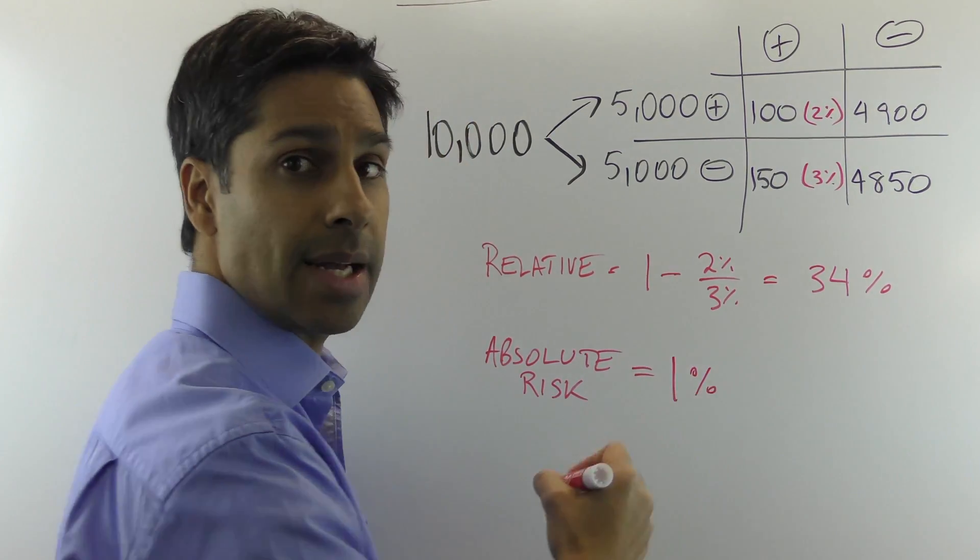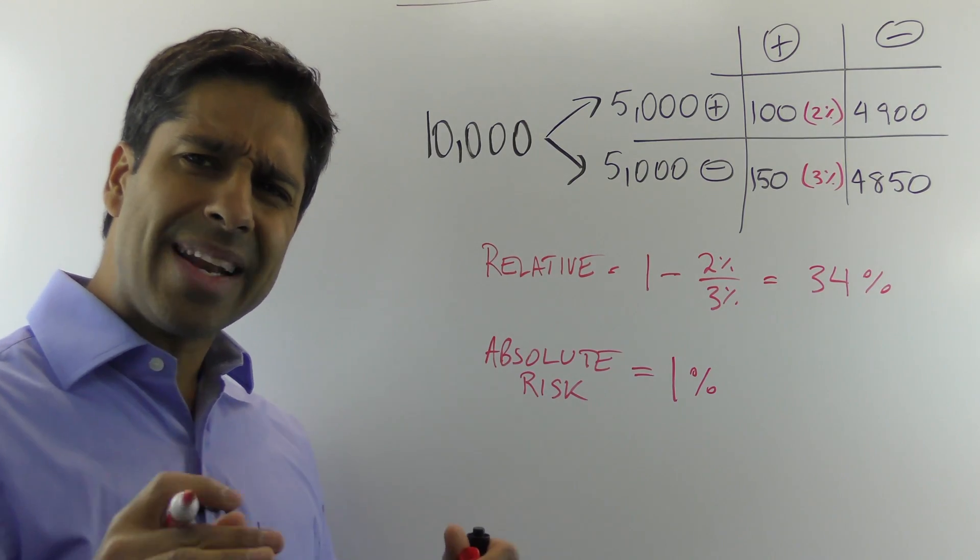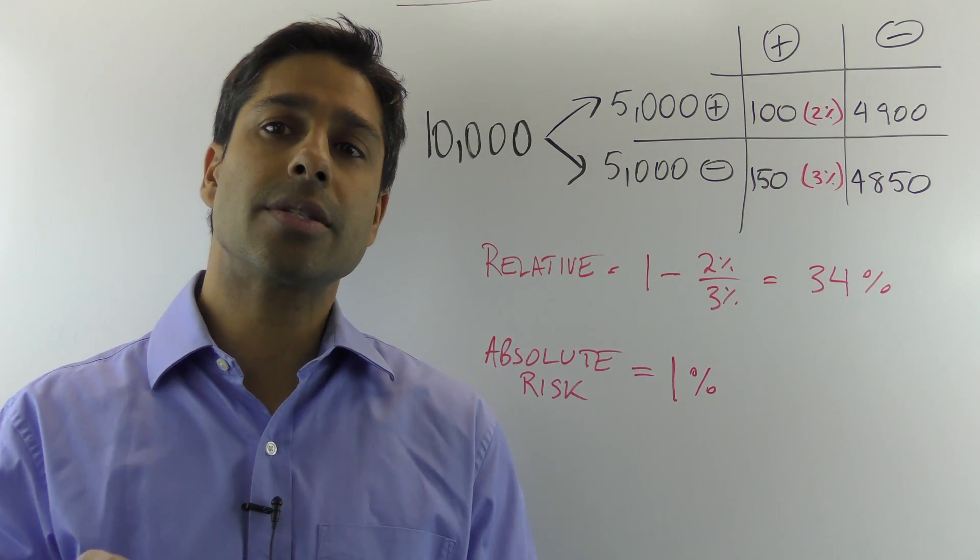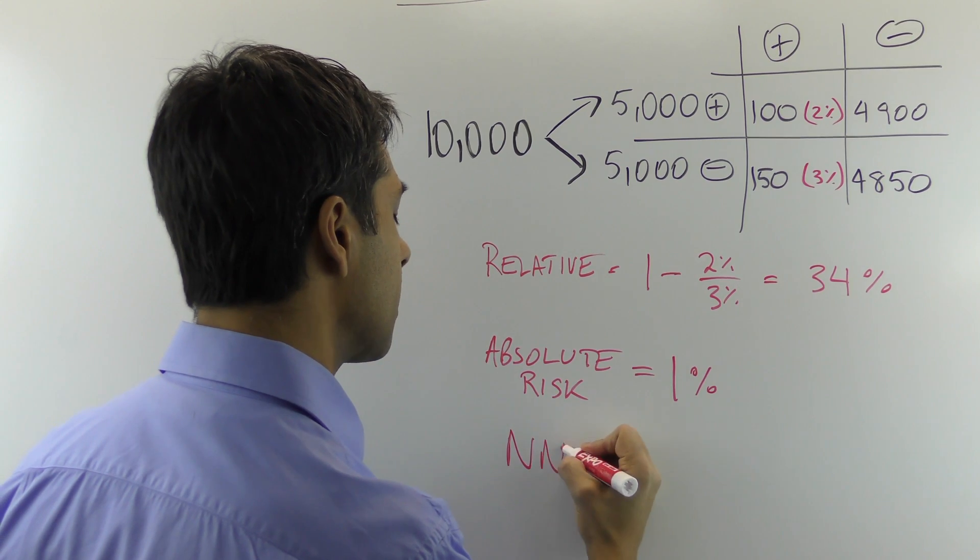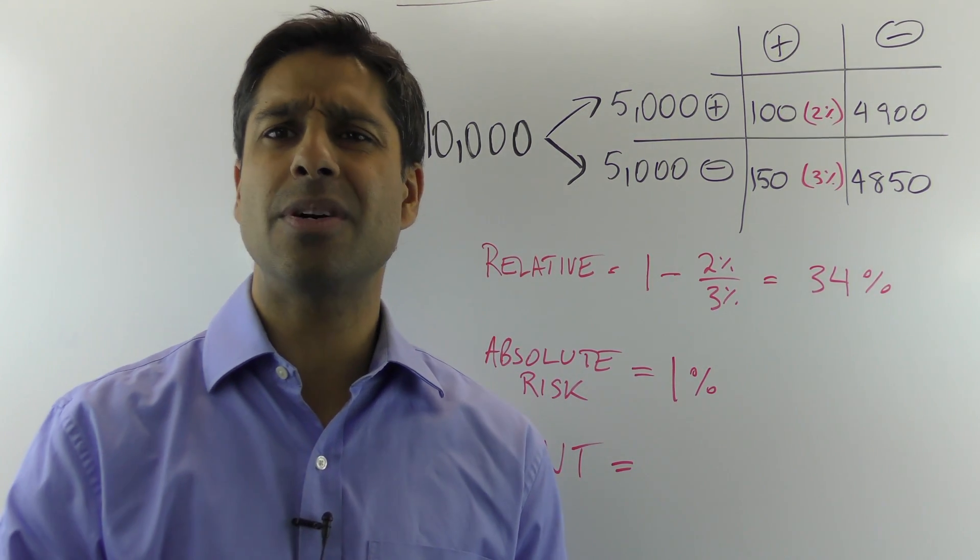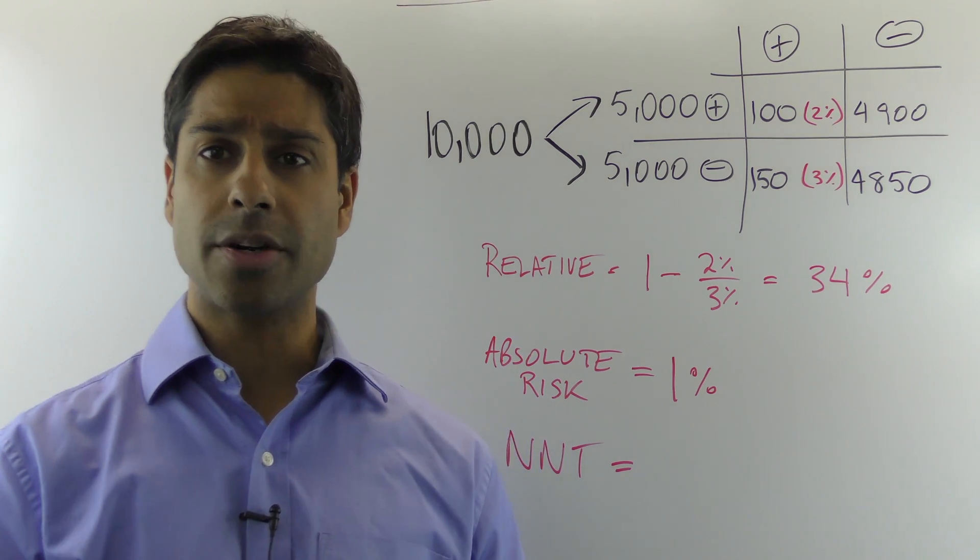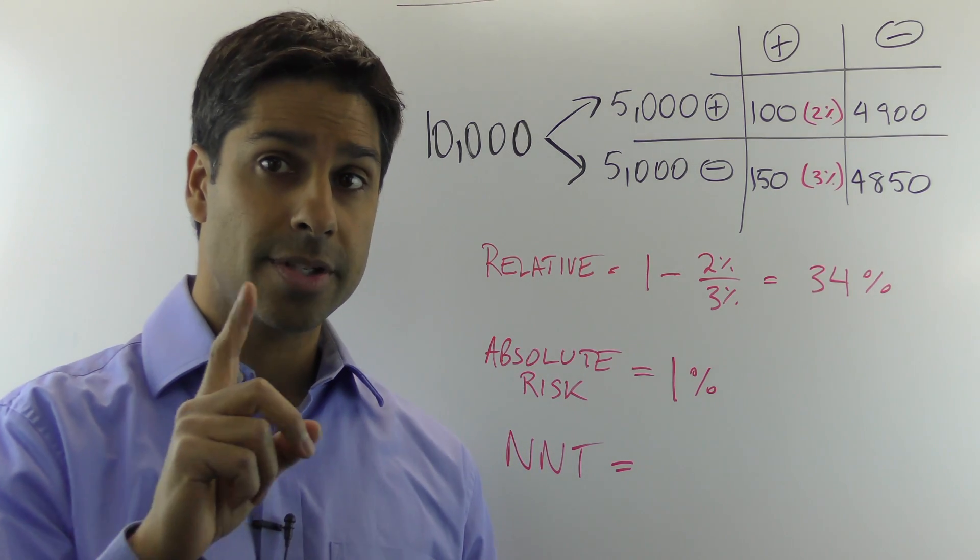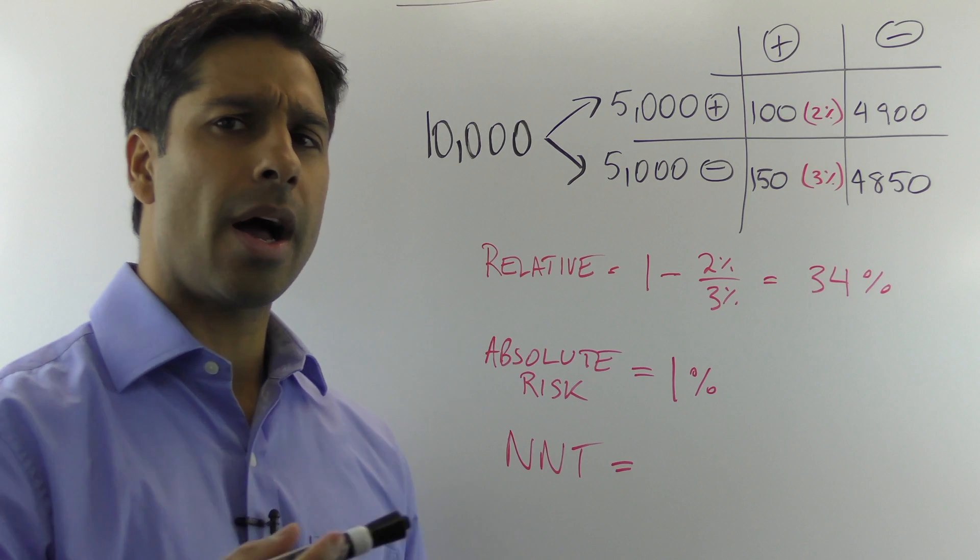So the absolute risk is 1%, and therefore the big number that you should ask your doctor is the NNT. And the NNT is the number needed to treat, how many people have to walk into a doctor's office for one person to benefit.